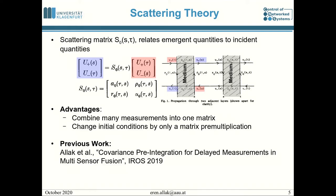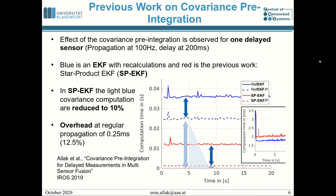We showed the benefits of scattering theory for covariance pre-integration at IROS 2019 in our previous work. Analyzing the effects for one delayed sensor with propagations at 100 Hz and a delay of 200 milliseconds: in blue, a normal reference EKF implementation is shown, and in red, the star-product EKF of our previous work. The covariance computations are decreased to just 10% of what they were before, at a cost of only 12.5% increased overhead during regular propagation steps.